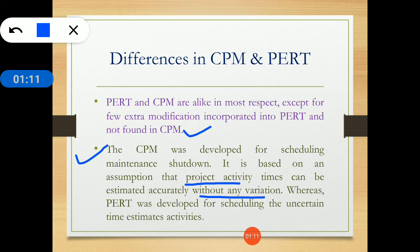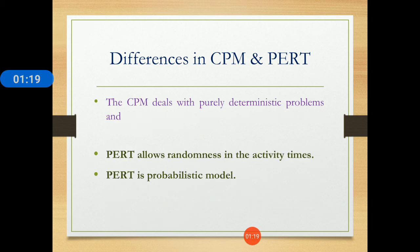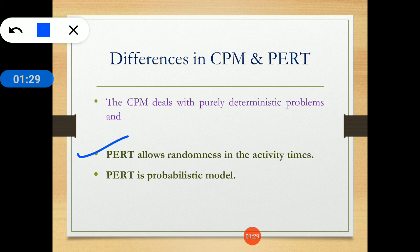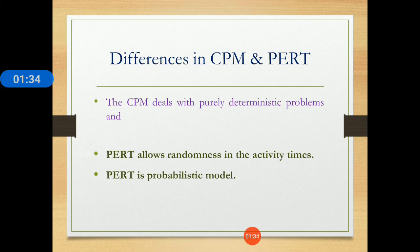PERT was developed for scheduling uncertain time estimate activities. PERT allows randomness in activity times, which is why it is called a probabilistic model — there is always randomness in the activity times and no fixed activity time, which is why we consider PERT a probabilistic model.